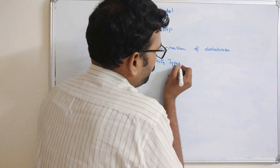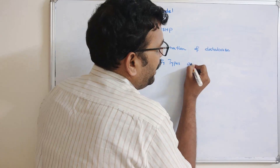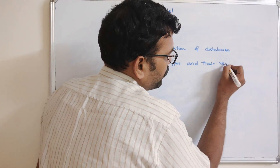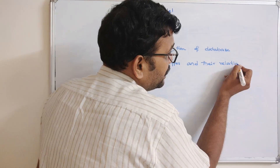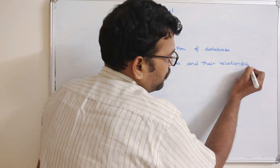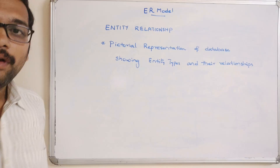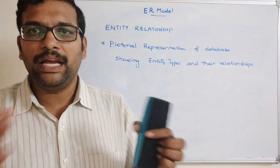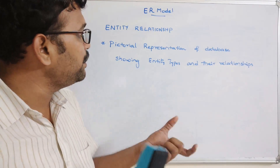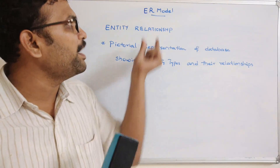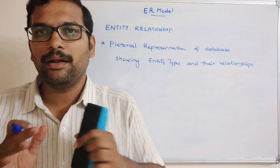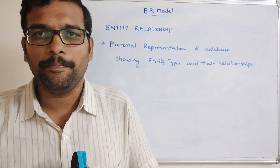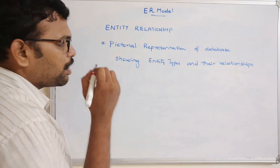Identifying the entity types and the relationships between them, and completely representing that in a diagrammatic format, is called an ER model — the Entity Relationship model.